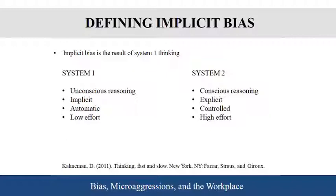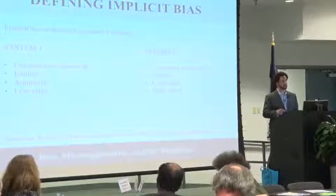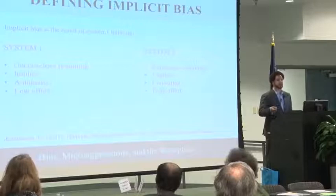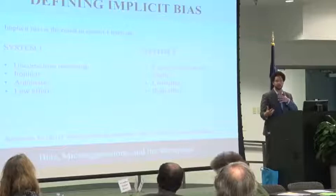In terms of System One and System Two thinking, oftentimes what we want to do is employ System Two thinking — being conscious about the words that come out of our mouths and how we engage and interact with other people. Doing so requires more control and a greater amount of effort. When a person engages System Two, they are less likely to convey bias and engage in microaggressions because they're being conscious about what they're doing and how they're perceived in their interactions.